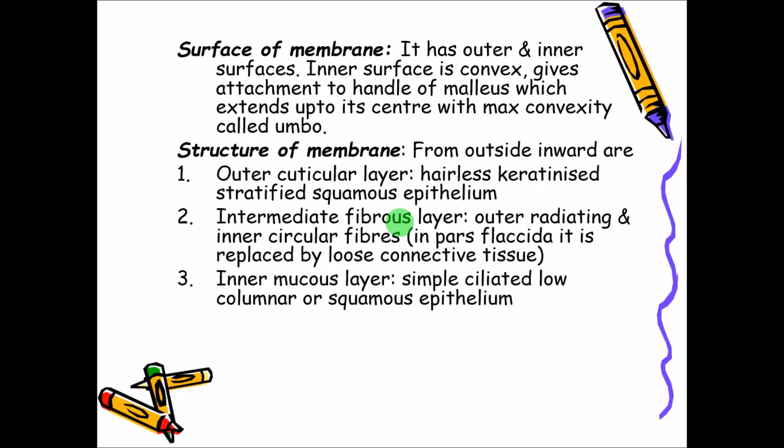The innermost mucosal layer, towards the middle ear, is covered by mucous membrane lined by simple ciliated columnar, or sometimes squamous, epithelium. So the three layers are: the outer cuticular layer, the intermediate fibrous layer, and the innermost mucosal layer.